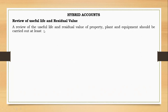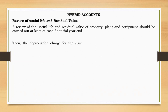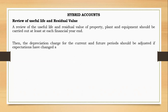A review of the useful life and the residual value of property, plant and equipment should always be carried out at least at each financial year end. You have to know if the useful life has changed or not, and then the depreciation charge for the current year and future periods should be adjusted. Depreciation using the straight-line method is cost minus residual value over useful life, but if the useful life has changed you also have to change it.